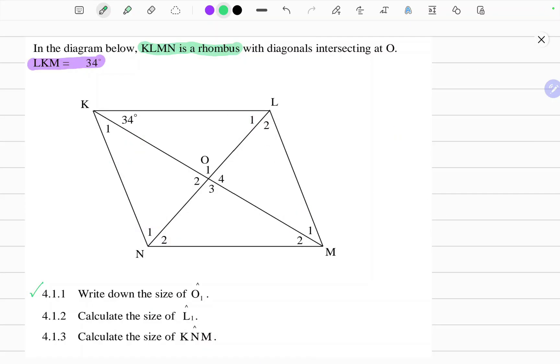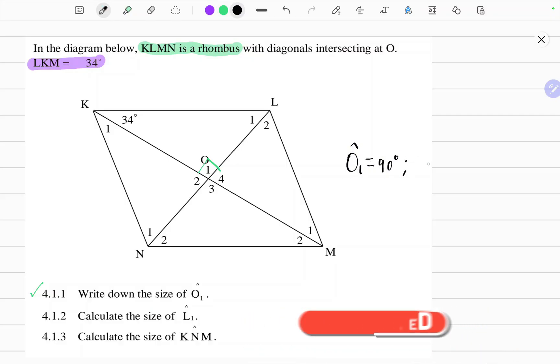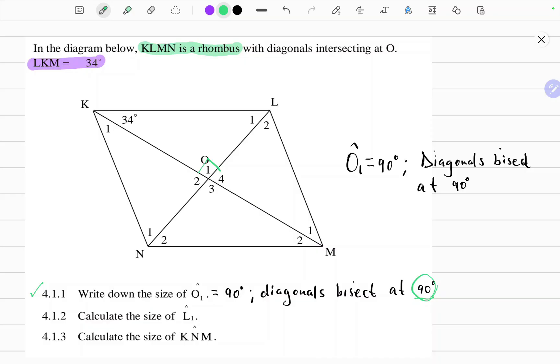So the first question, write down the size of angle O1. We know one of the properties of a rhombus is the diagonals bisect at 90 degrees. So angle O1 equals 90 degrees and the reason is diagonals bisect at 90 degrees. Diagonals bisect at 90 degrees simply means that the diagonals are perpendicular. The angle that forms between the diagonals is 90 degrees.